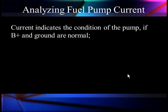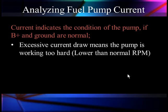Current is going to give us a good indication of the condition of the pump, if B+ and ground are normal. Check B+ and check ground first thing if the current doesn't look normal — don't ignore B+ and ground. Excessive current flow means the pump is working too hard and will usually have lower than normal RPM — it's being loaded down. Look for a crushed line, a collapsed filter, or something causing the pump to work extremely hard to try to generate pressure.